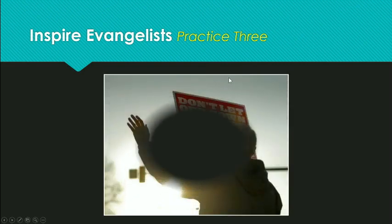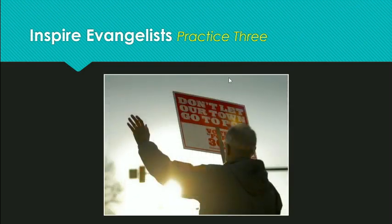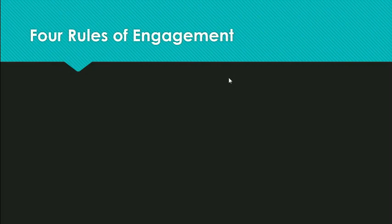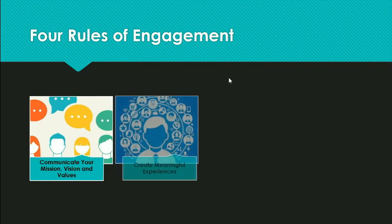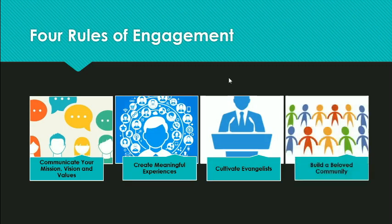Crutchfield and Grant discovered that the 12 high-impact nonprofits studied go beyond building a community among their internal staff and clients — they actively mobilize the public for greater social change. As the nonprofits grow, they continually expand their circle of support, individuals served, and influence in their communities, steadily creating change makers. Crutchfield and Grant identified four rules of engagement to create evangelists for your nonprofit: communicate your mission, vision, and values; create meaningful experiences; cultivate evangelists; and build a beloved community.